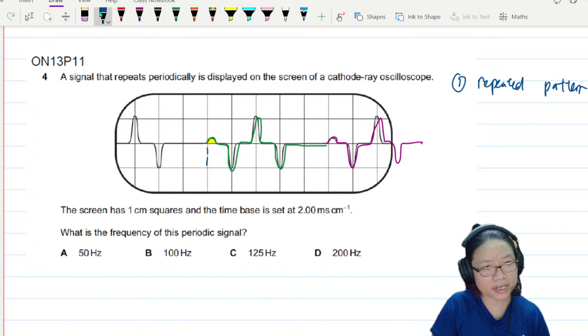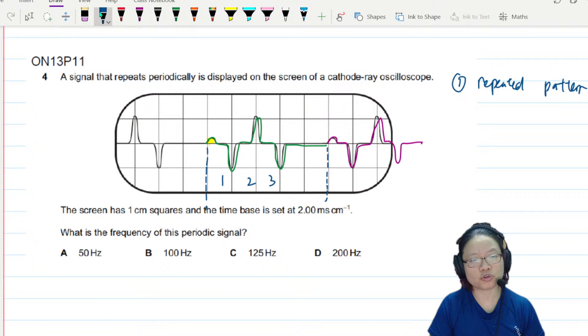Look at the repeated pattern and then draw it out. This is a repeated pattern. Count the boxes: one, two, three, four, five. So there are five boxes. It says here these are 5 cm squares, so one cm square. Five boxes is 5 cm, and the time base is set to 2 milliseconds per cm.